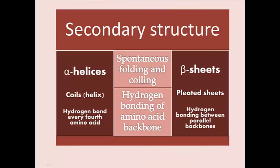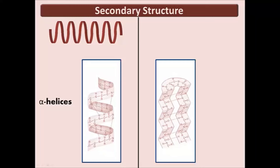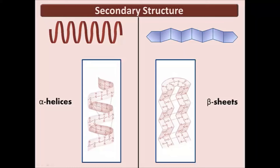Secondary structure is the spontaneous folding and coiling of primary structure. It is the result of hydrogen bonding between segments of the polypeptide backbone. The carboxylic oxygen on the backbone has a partial negative charge, and hydrogen on the amino group has a partial positive charge — hydrogen bonds form between these atoms. These individual hydrogen bonds are quite weak, but when repeated over and over they are collectively strong. The two most common types of secondary folding are alpha helices and beta sheets. Alpha helices are coils formed by hydrogen bonding on every fourth amino acid. Beta sheets have at least two parallel polypeptide backbones held together by hydrogen bonds and are pleated.